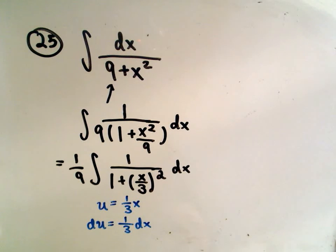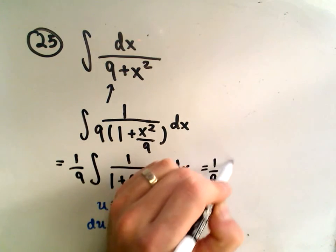So in my problem, I think when I go to relabel everything here, when I go to relabel, my 1/9th is still out front.